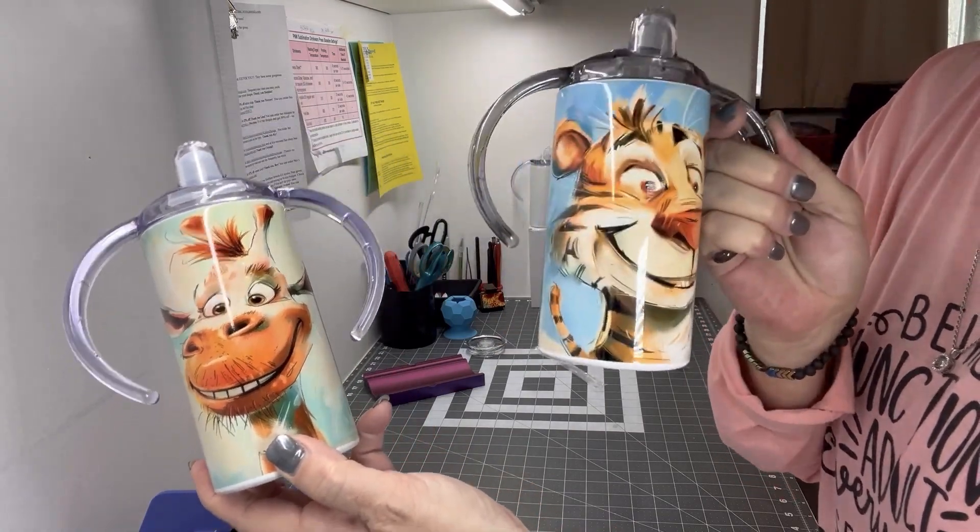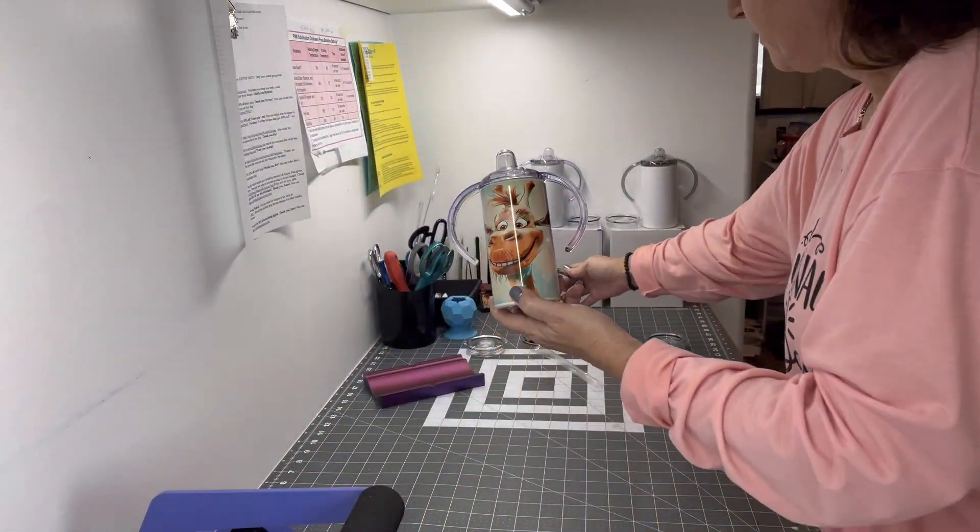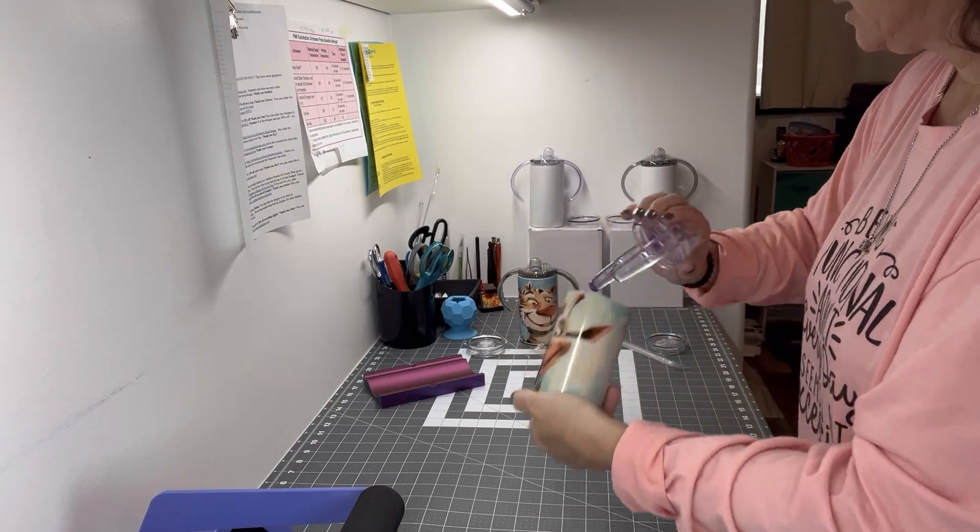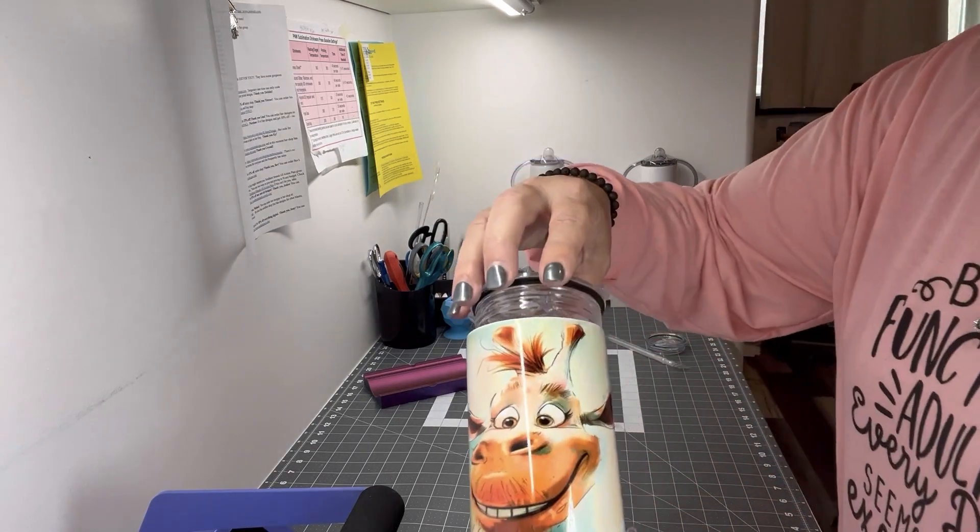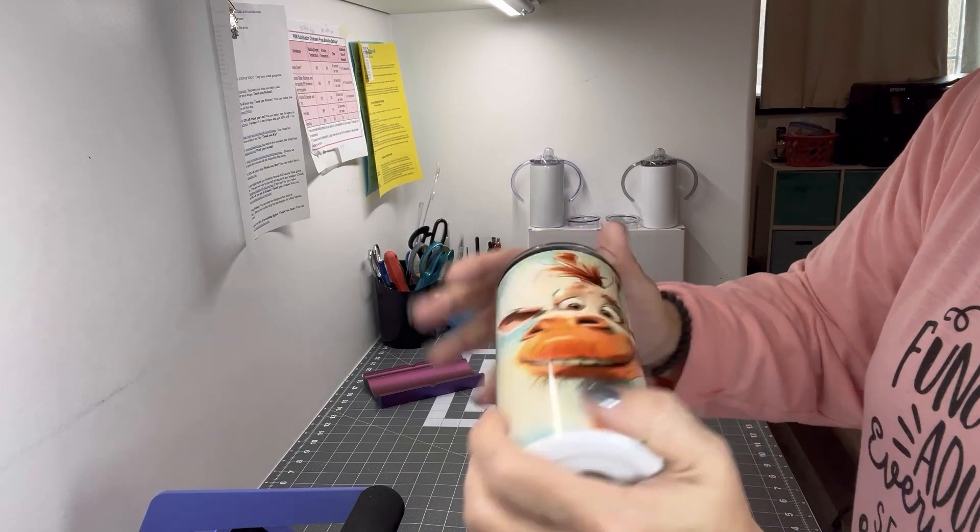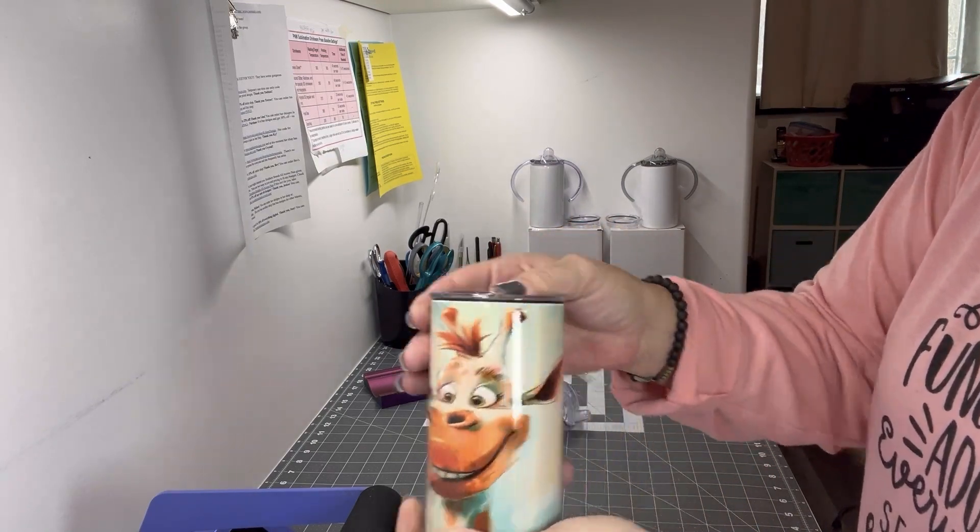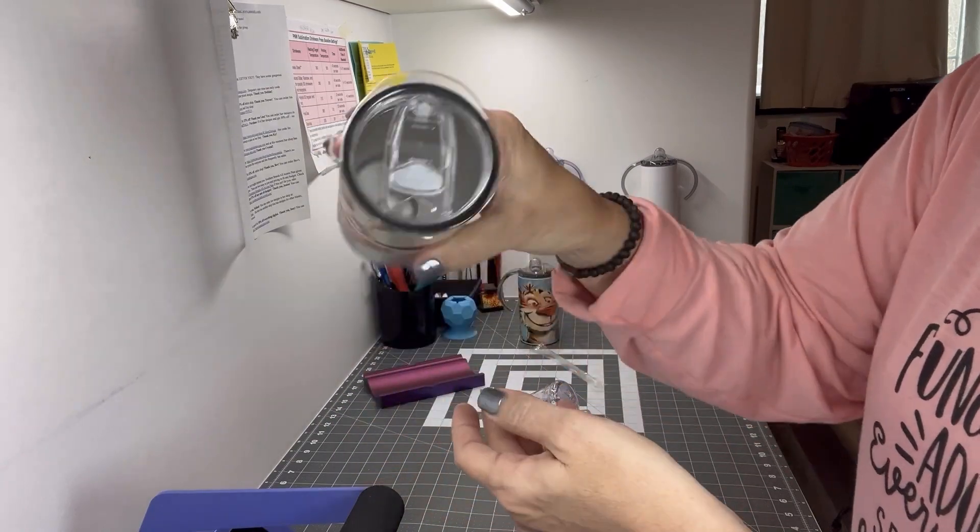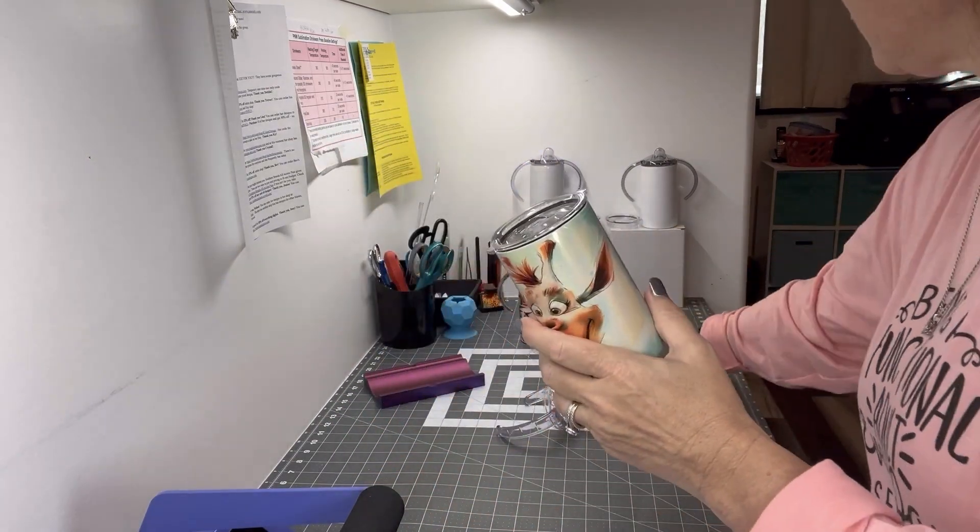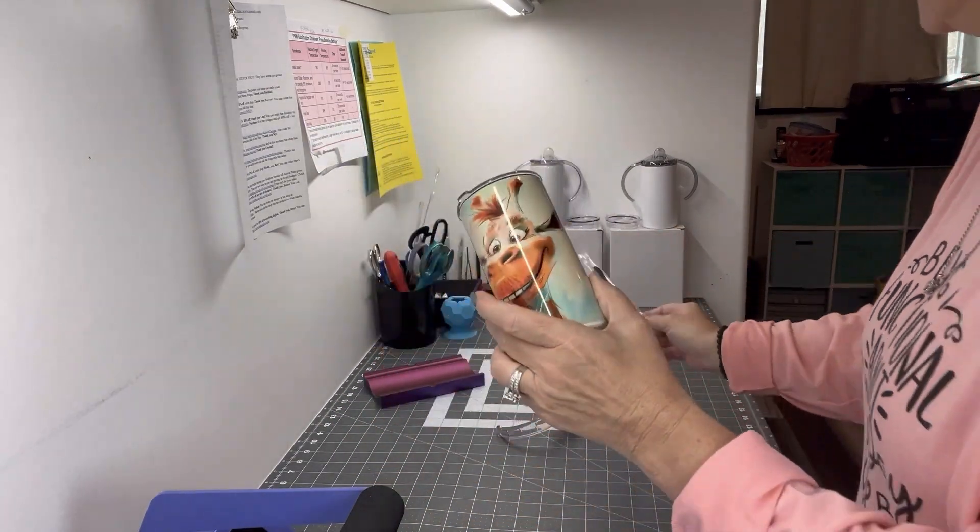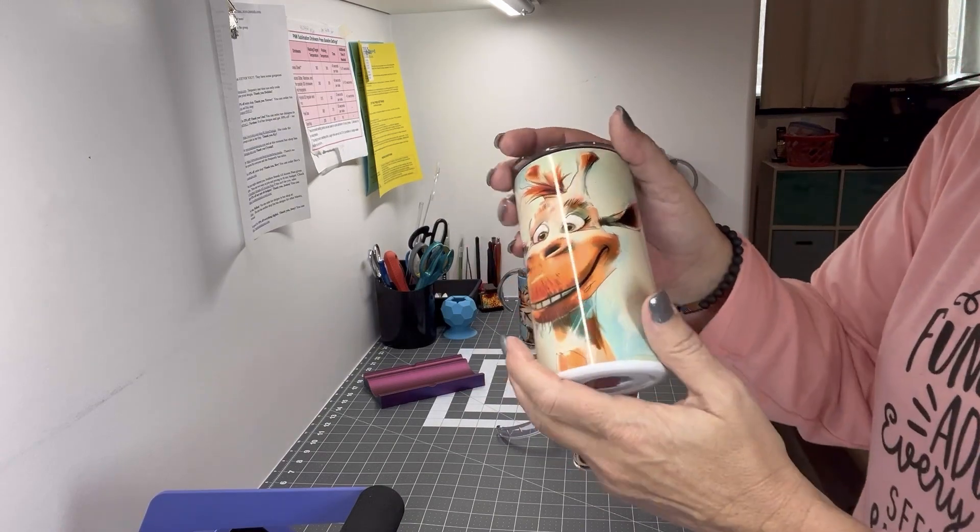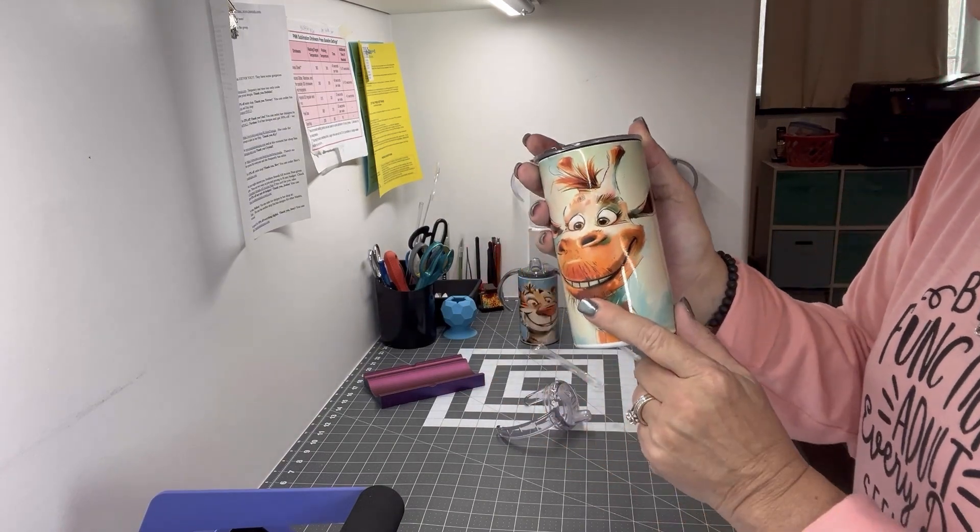We've got our glossy and our shimmer. Remember they come with the twist slider lid and a straw, so once they're done with their sippy portion, they can turn it into a cup.